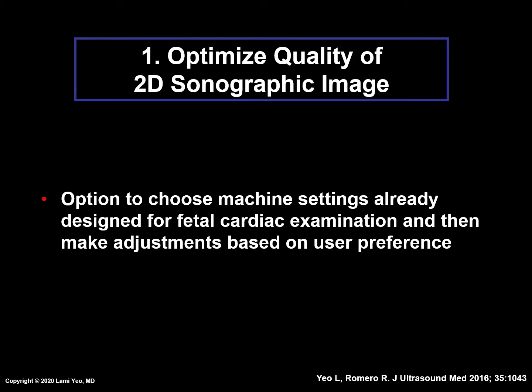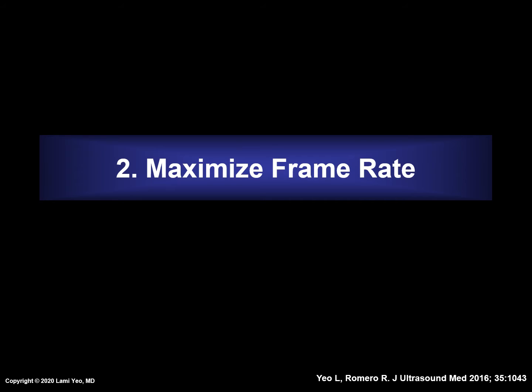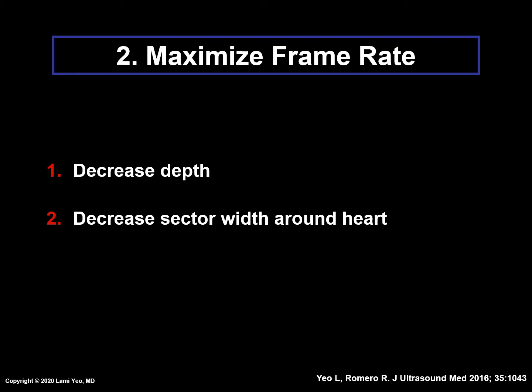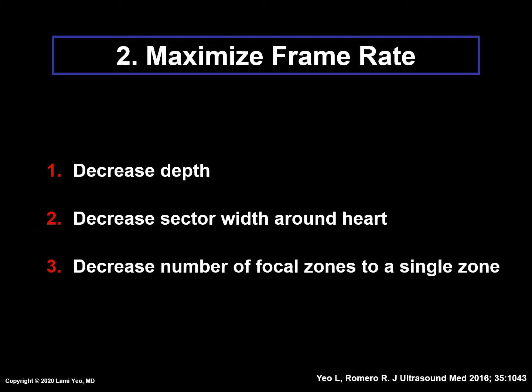One option is to choose ultrasound machine presets already designed for fetal cardiac examination and then make adjustments based on user preference. The frame rate is defined as the number of ultrasound images displayed in one second, and is expressed in hertz. A high frame rate leads to improved quality of the STIC volume since there will be more frames within the volume. Maximizing the frame rate can be accomplished by decreasing three parameters: depth, so there is less depth below the fetal heart in the imaging window; sector width around the heart, so that other irrelevant structures are not in the field of view; and the number of focal zones, so there is a single zone.